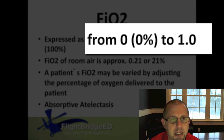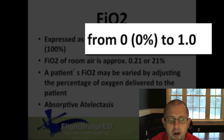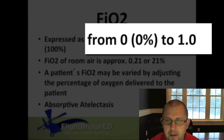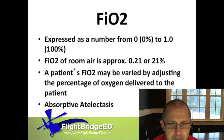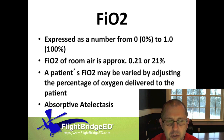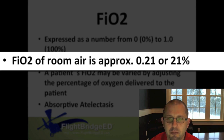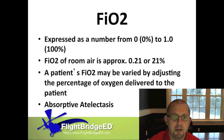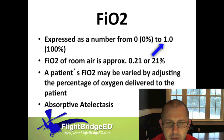21% being room air — that's what we take in from atmospheric air. Or 100% being the most we could give on the ventilator. When you document this, you can either say 21%, but most often it's in decimal form: 0.21 is 21%, or if you're going to do 100%, it's 1.0 — that equals 100% FiO2.